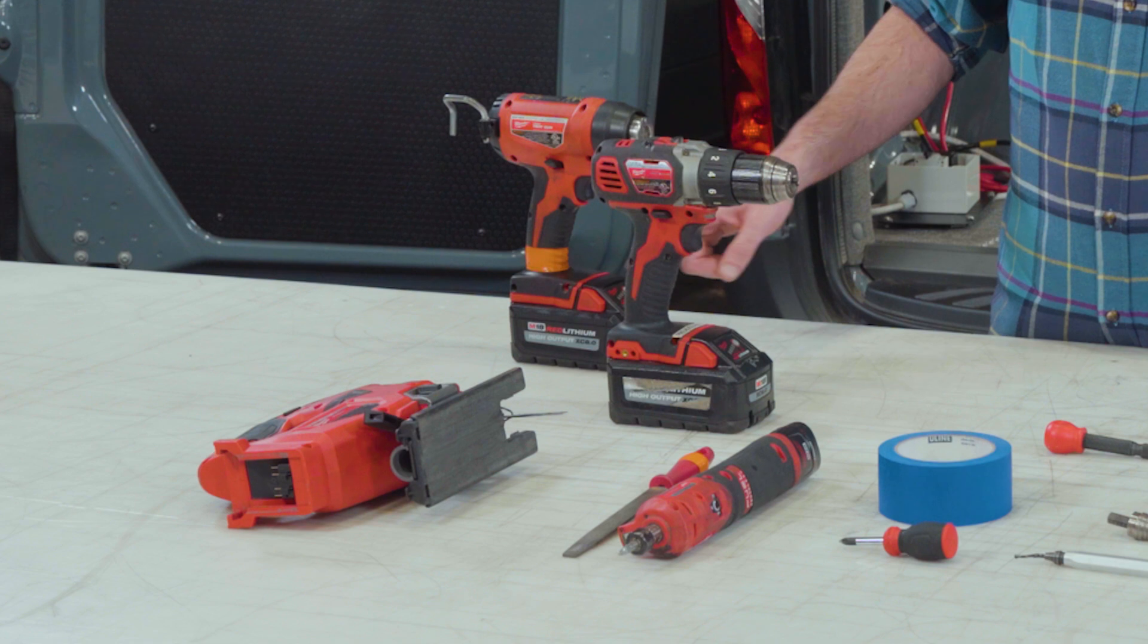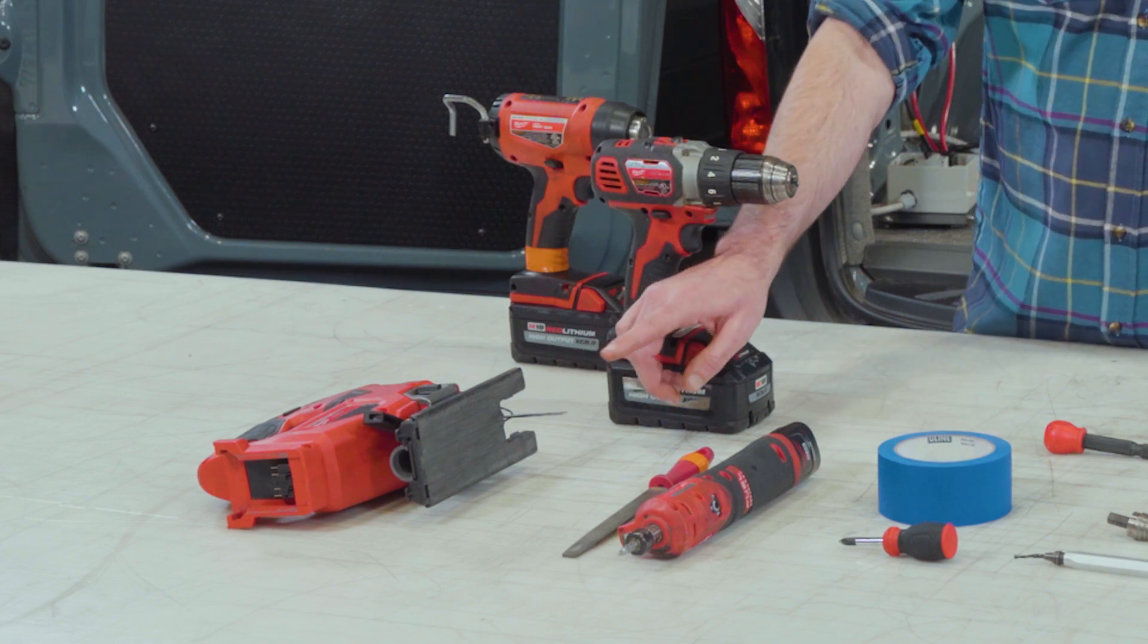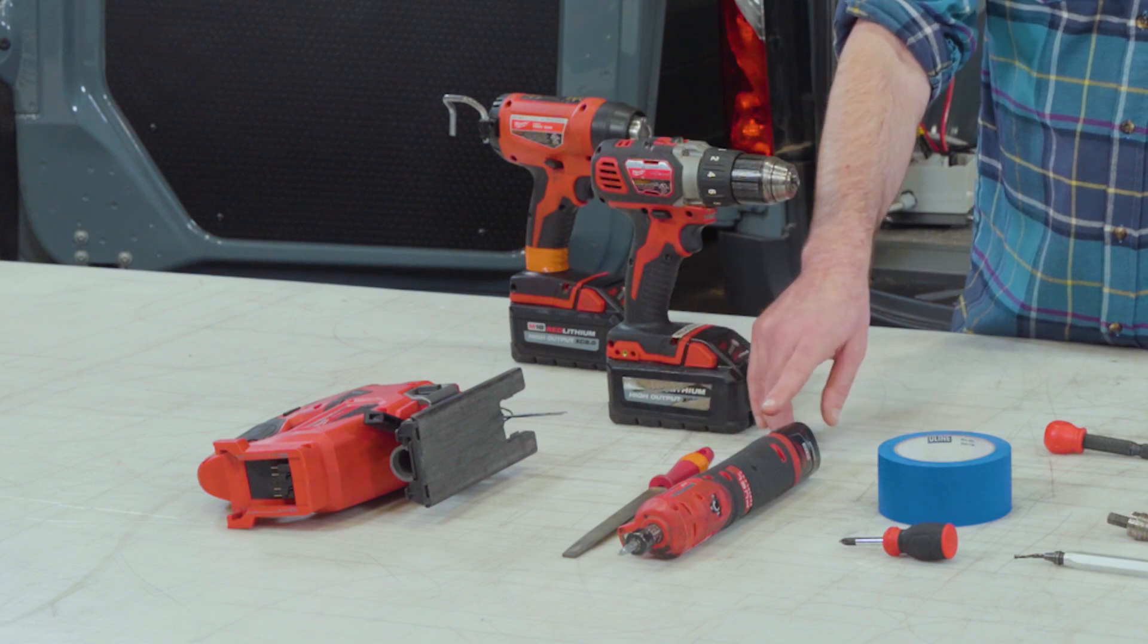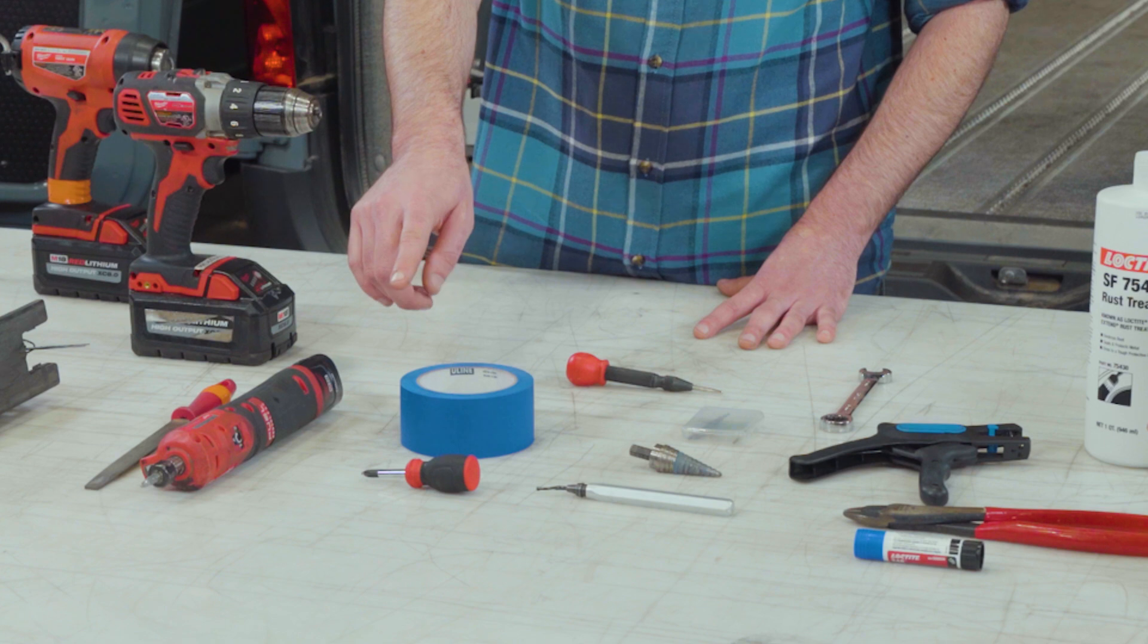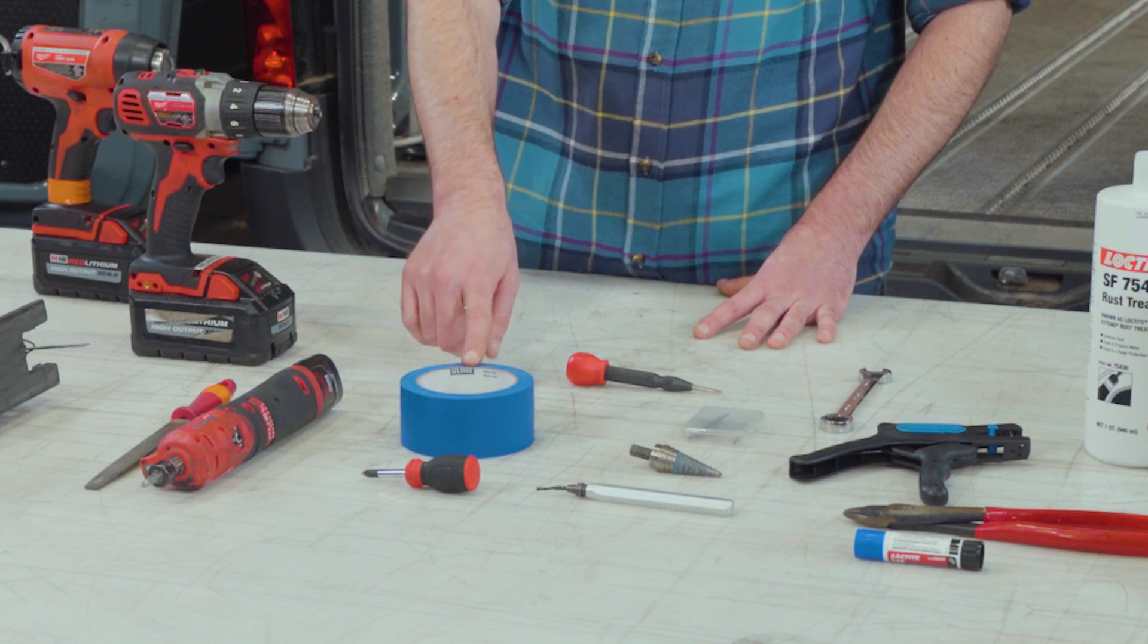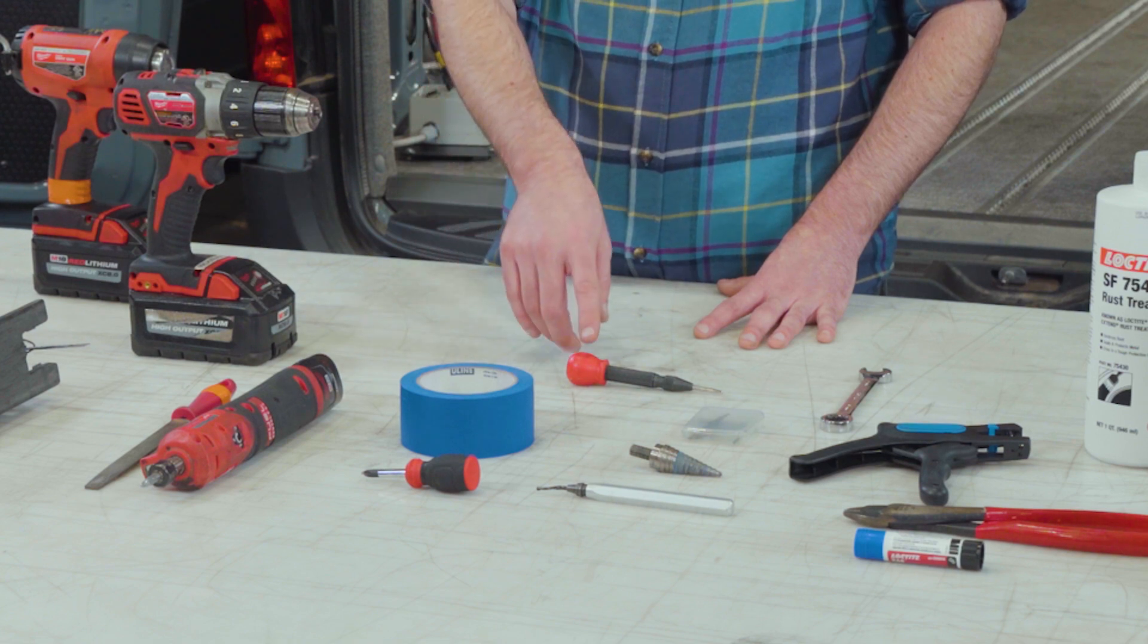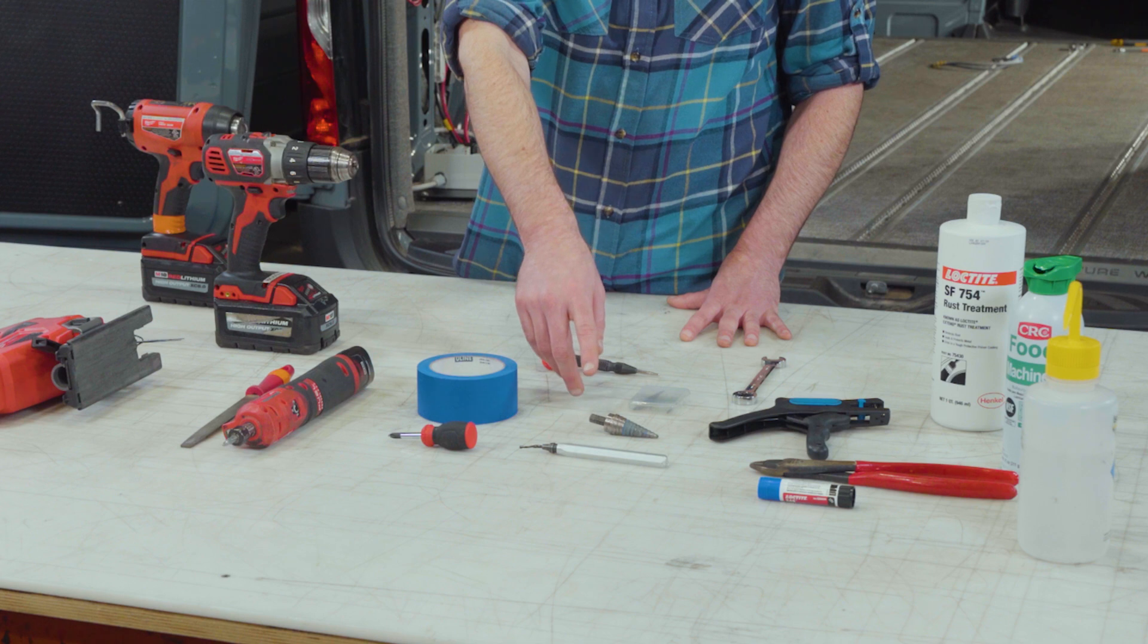You'll need a heat gun, a cordless drill, a jigsaw with a metal blade, a fine file or some sort of die grinder to clean up the cuts in the roof for your solar gland, Phillips head screwdriver, painter's tape to protect the paint on the roof when you're cutting for the solar gland, a punch to help you start your holes, a deburring tool, and a hole saw.